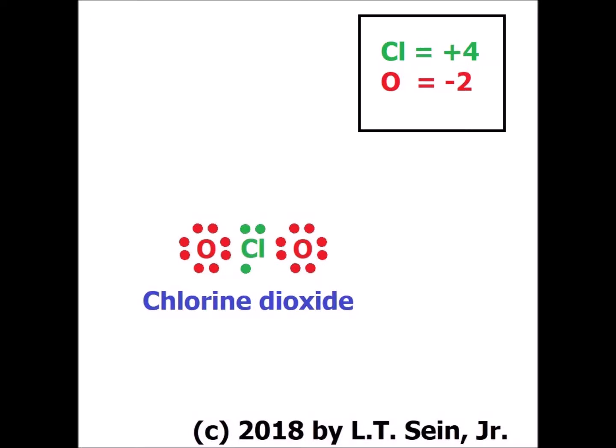Chlorine dioxide has the chemical formula ClO2. Each of the oxygens brings in six valence electrons, giving 12 total, plus seven more for chlorine gives us 19 electrons. Since we have an odd number of electrons, we have a free radical, and there is no way to satisfy the octet rule for every single atom. We can get close by having seven electrons on chlorine and satisfying the octet rule for oxygen. Since chlorine started with seven valence electrons and now has three in chlorine dioxide, chlorine has the unusual oxidation number of plus four.